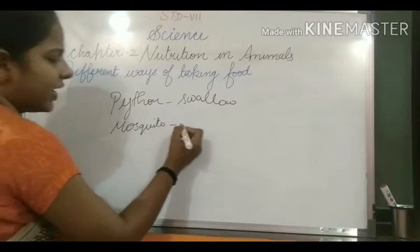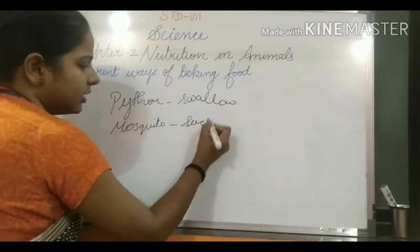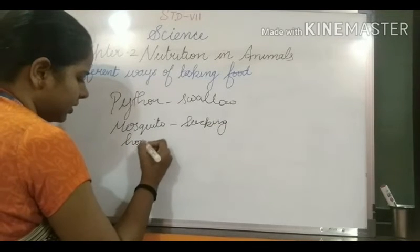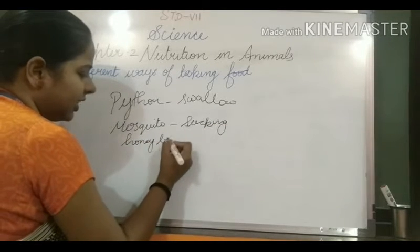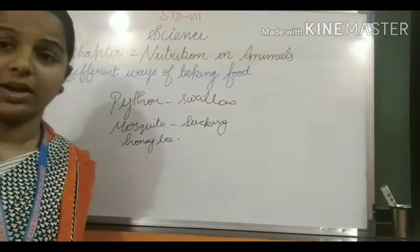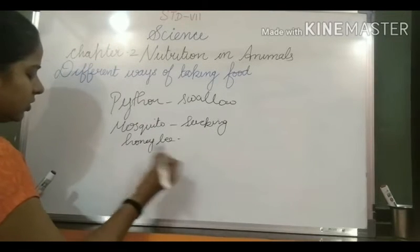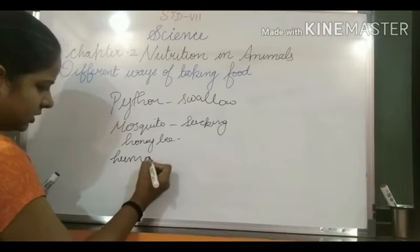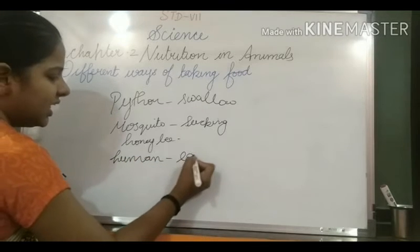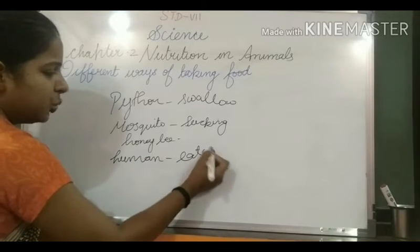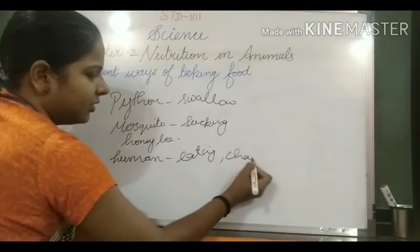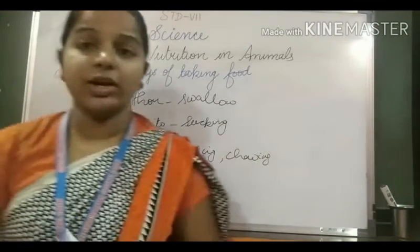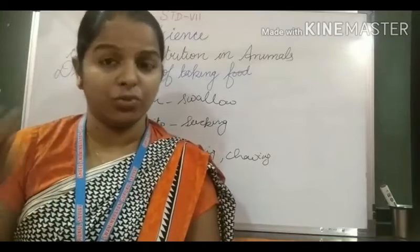For example, a mosquito is sucking the food. A honeybee is also sucking the food. And humans — we are eating by chewing. Like this, different animals eat in different ways.